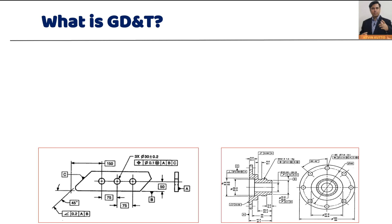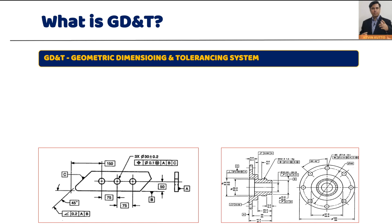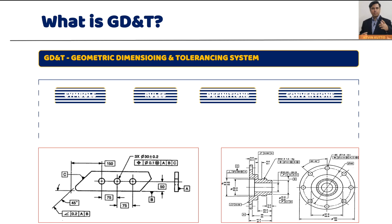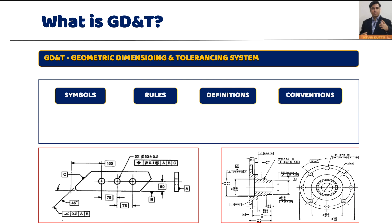What is GD&T? GD&T stands for Geometric Dimensioning and Tolerancing. It's an internationally recognized language for drawings to accurately describe a part or component. It consists of symbols, rules, definitions, and conventions — and conventions are widely used best practices.